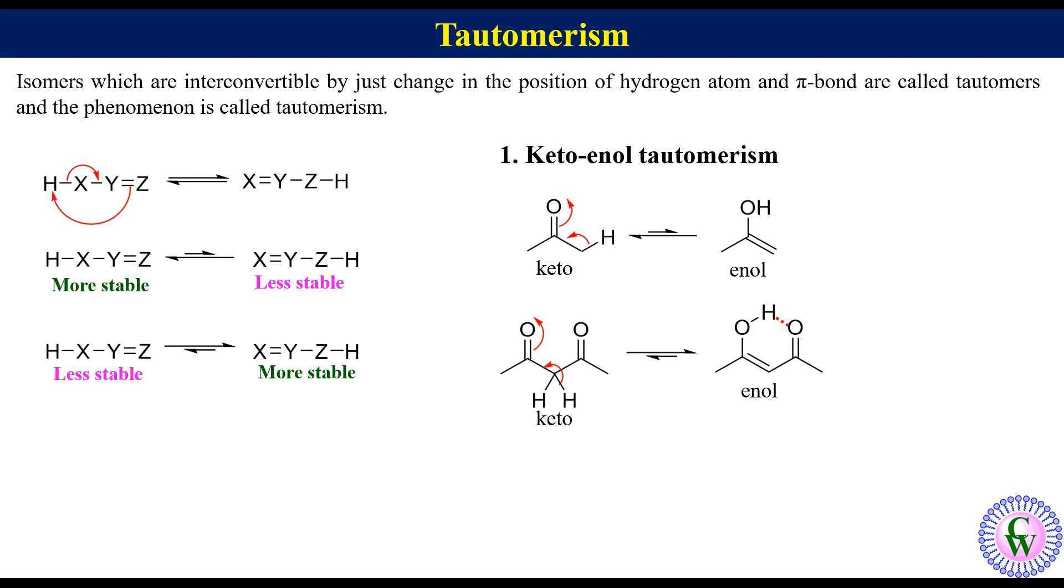Third example is phenol and keto form of which can be drawn like this. Enolization like this will give enol form. Here we can see that the keto form is non-aromatic while enol is aromatic. This makes enol form very stable and because of that it mainly exists in enol form and therefore the equilibrium arrow can be drawn like this.